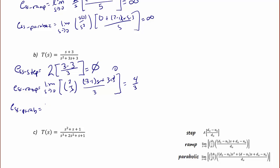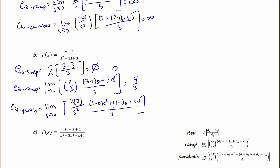For the parabola, we have the limit as s goes to 0 of 2·(2/s²) times [(d2 - n2)·s² + (d1 - n1)·s + (d0 - n0)] / d0, which is [(1 - 0)·s² + (3 - 1)·s + (3 - 3)] / 3. We can't cancel out the s², so it does not track a parabola — the steady state error is infinity.